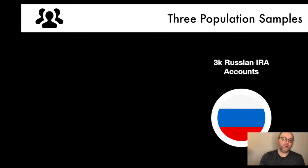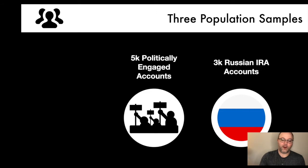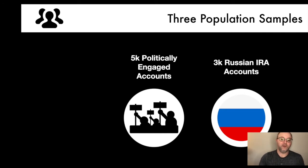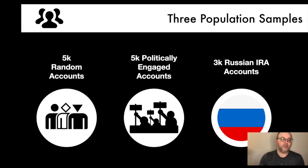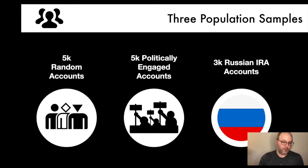This gives us about 3,000 Russian IRA accounts from Twitter and about 1,000 accounts from Reddit. For a critical comparison, we provide two comparison groups: a set of 5,000 politically engaged Twitter and Reddit accounts, and a set of 5,000 random accounts sampled from both platforms, which lets us differentiate behaviors of the Russian IRA from more legitimate kinds of online behavior.